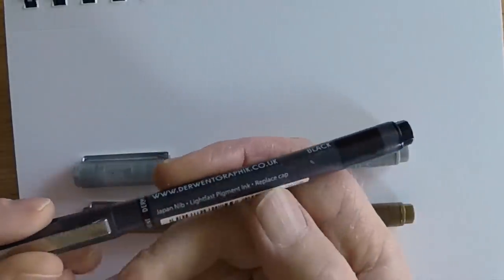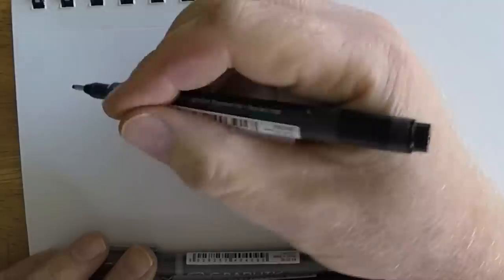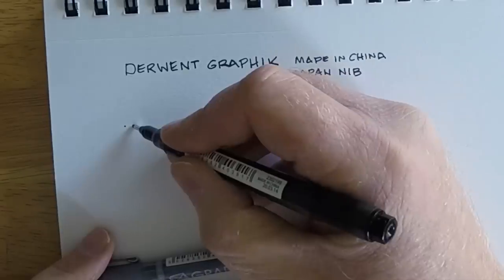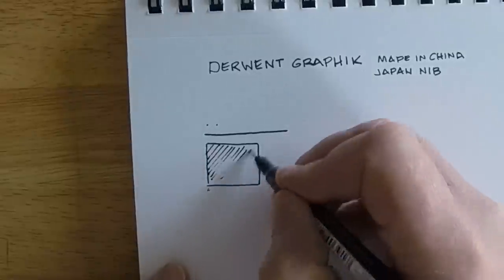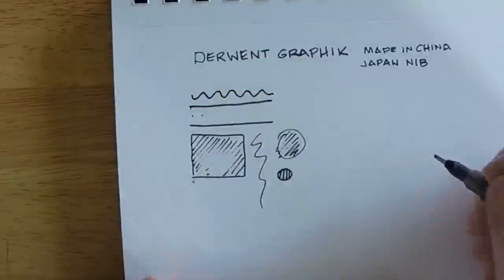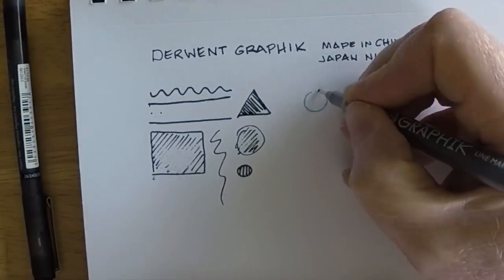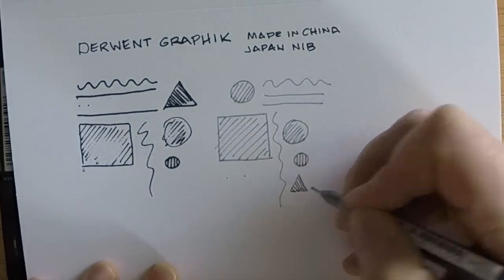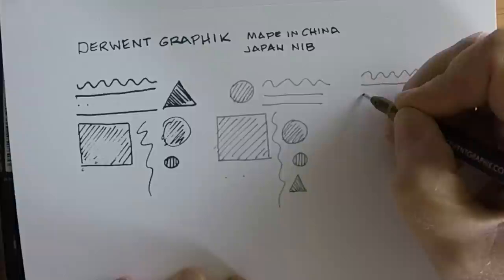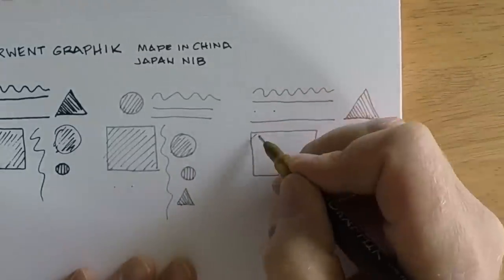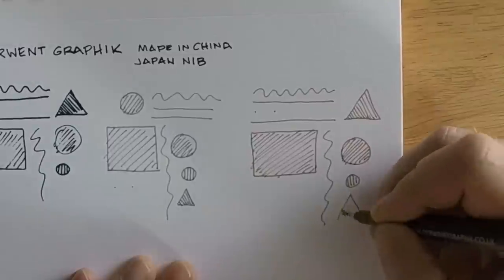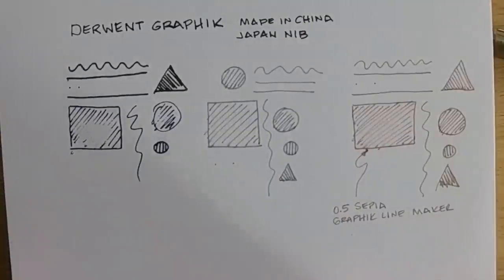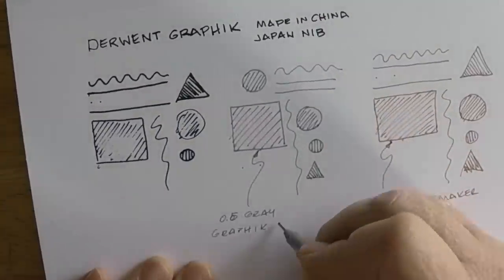The next one we're going to take a look at is the Derwent Graphik Line Maker, and this is a 0.8 millimeter in the black color. Notice right away the skipping and the hatching as I hatched—you could see it was skipping and I wasn't going that fast. So I'd say the ink flow is not as good in that black, the heavier black marker. But in the finer tip, the 0.5 tip in the sepia and the gray, the ink flow was much better and I had not as much scratching or skipping.